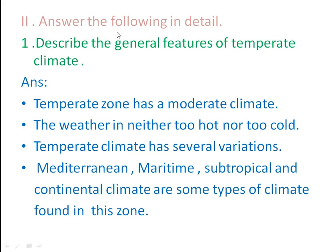Second section: answer the following in detail. First question: describe the general features of temperate climate. The temperate zone has a moderate climate — the weather is neither too hot nor too cold. Temperate climate has several variations: Mediterranean, maritime, subtropical, and continental climate are some types found in this zone.